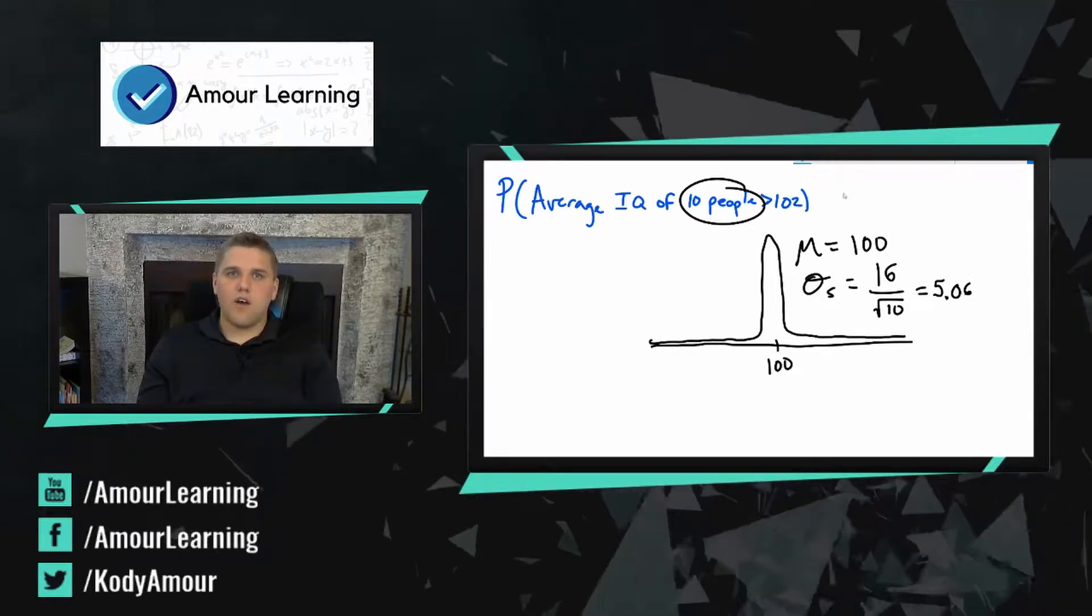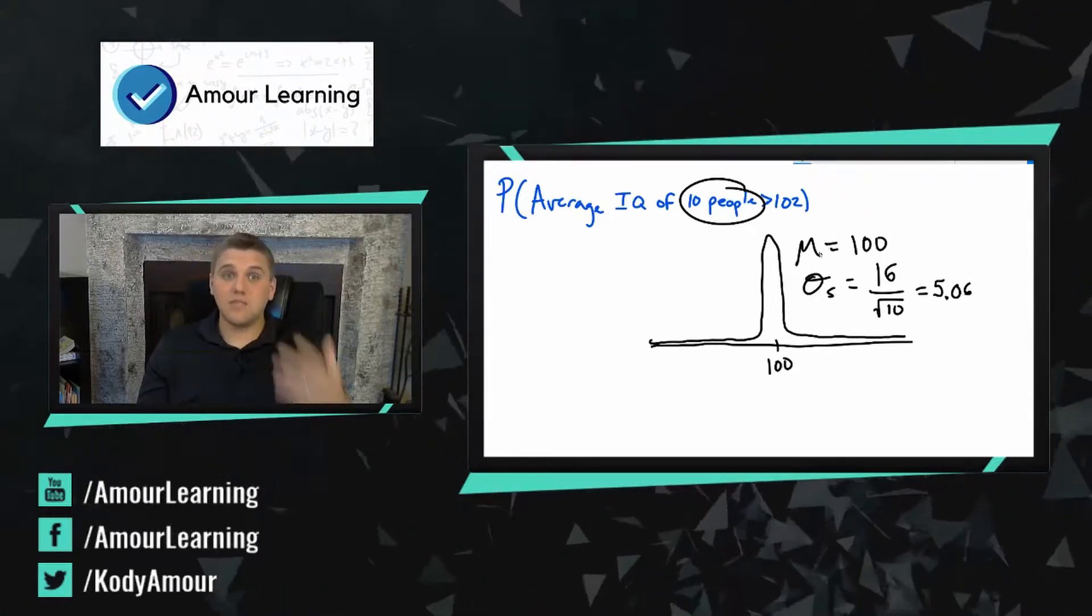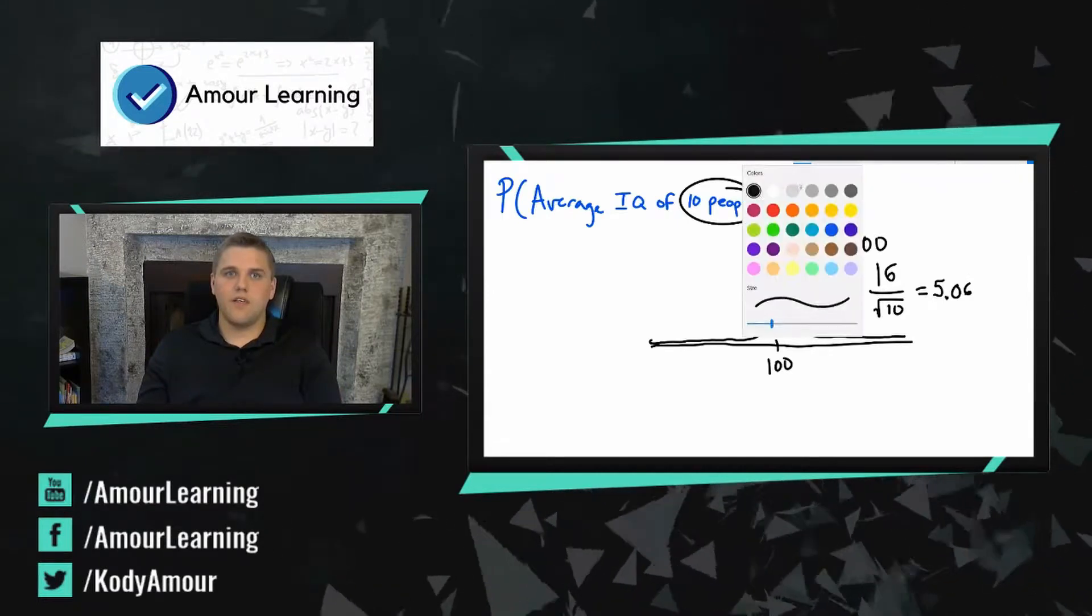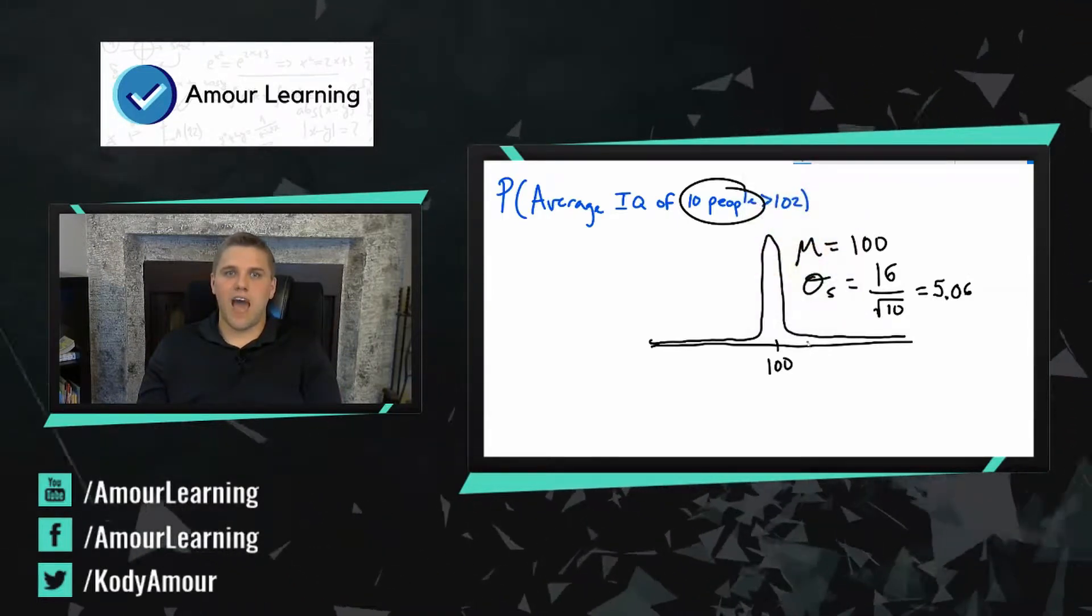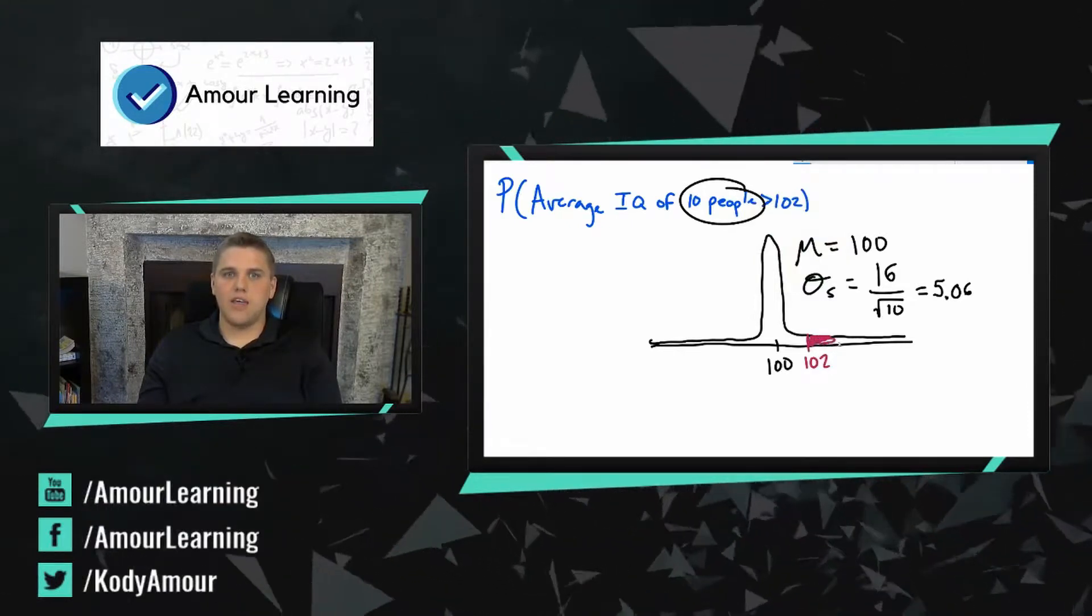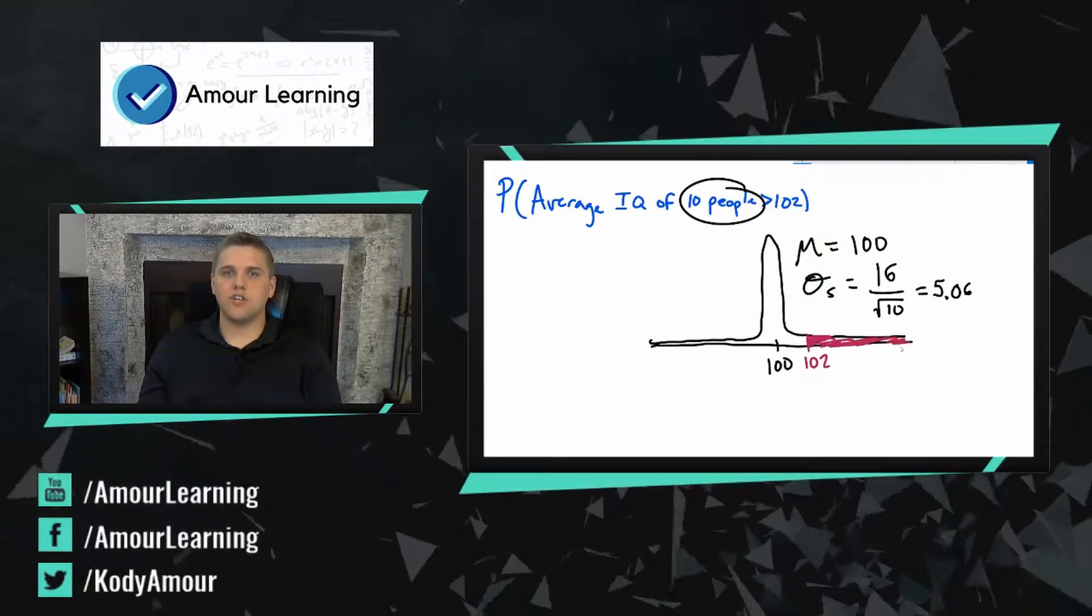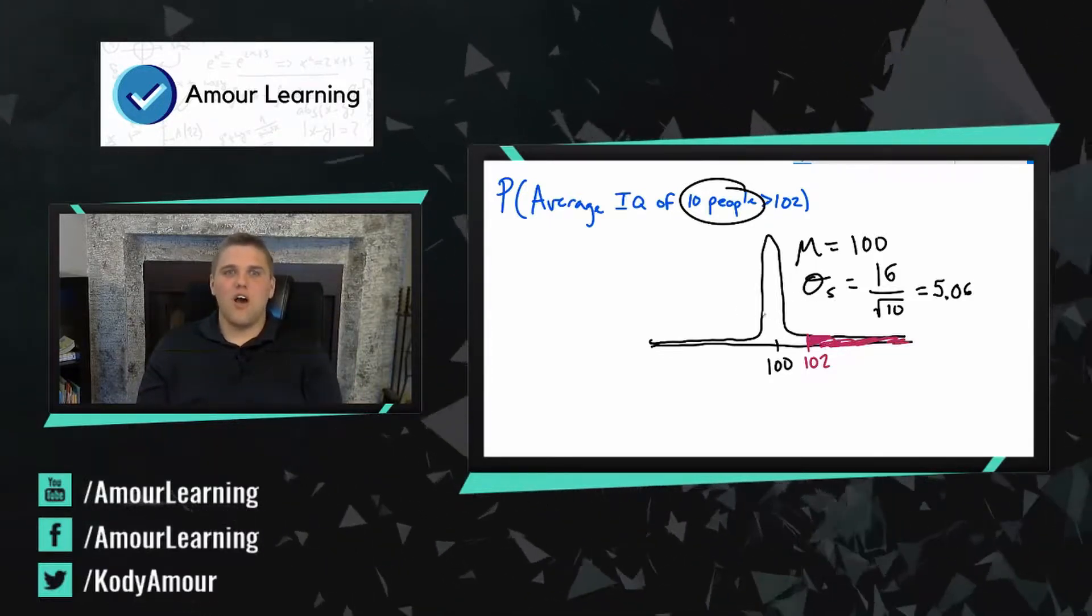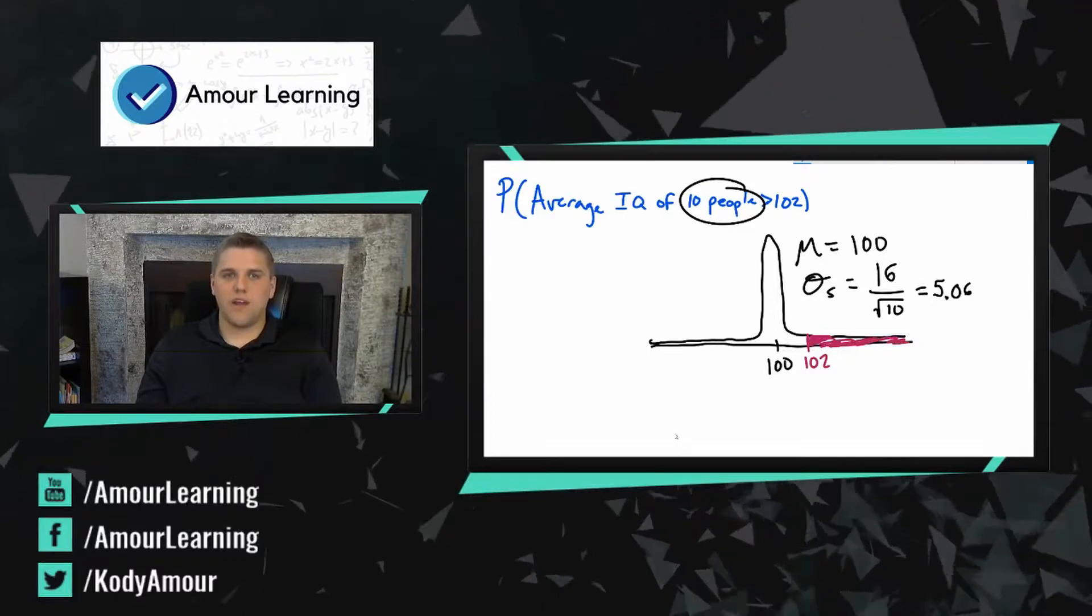So now we have the statistics of this bell curve and we're trying to find what's the probability that my average is greater than 102, which can be measured by the area of this region. Now this is great practice, great review.